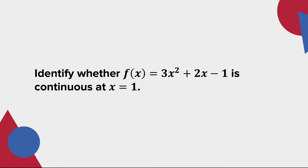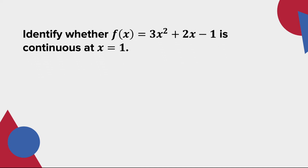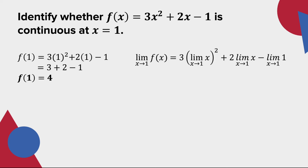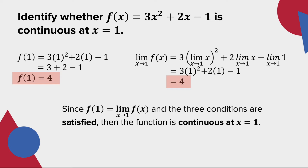Identify whether the function 3x squared plus 2x minus 1 is continuous at x is equal to 1. Evaluating the function at x is equal to 1, we have f(1) which is equal to 4. By using limit laws or direct substitution, the limit of the function 3x squared plus 2x minus 1 as x approaches 1 is equal to 4. Since f(1) is equal to the limit of f(x) as x approaches 1 and the three conditions are satisfied, then the function is continuous at x is equal to 1.